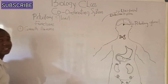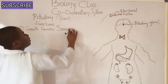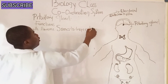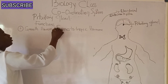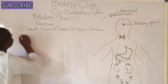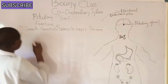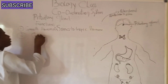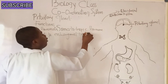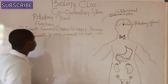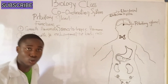The first hormone to discuss is the growth hormone, also called the somatotropic hormone. The growth hormone helps during the growth and enlargement of body cells. It is classified under the anterior pituitary hormones.